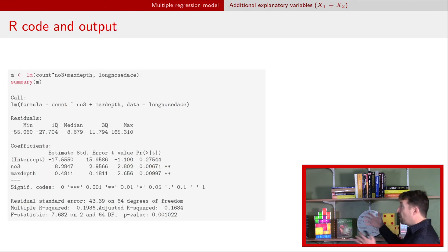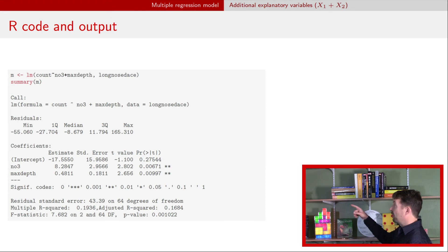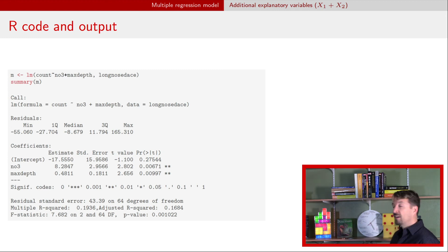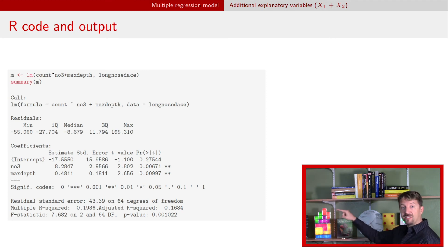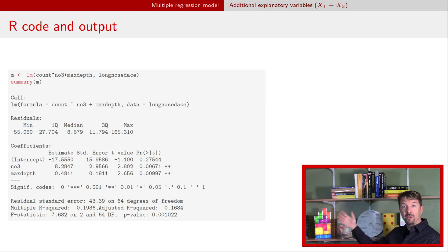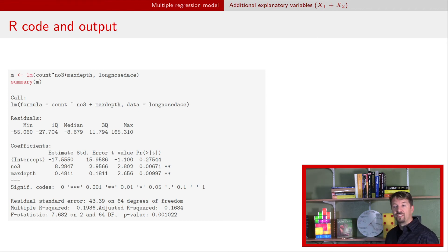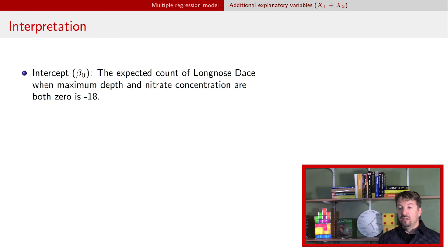Here is the model fit in R. In the LM statement we just include the two explanatory variables with a plus sign between them — so we include nitrate, which is NO3, and max depth in this multiple regression model. Down below we have three lines corresponding to beta-0, beta-1, and beta-2. We can see the intercept is beta-0, beta-1 is the coefficient for nitrate, and beta-2 is the coefficient for max depth.